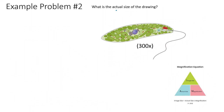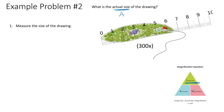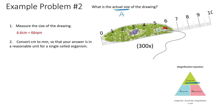Another problem: what is the actual size of the drawing? We are now calculating A, so we use A equals I over M. The first step is to measure the size of the drawing with a ruler. Measuring that object, I get roughly 66 millimeters, which is 6.6 centimeters. We convert to millimeters so the answer is in a reasonable unit for a single-celled organism — 66 millimeters.